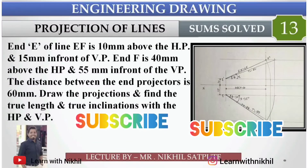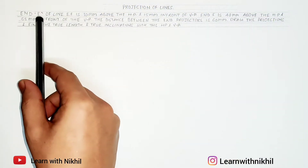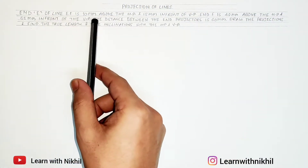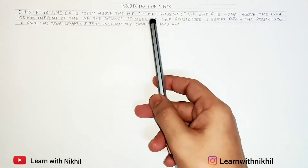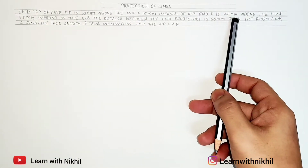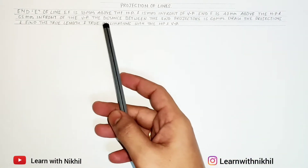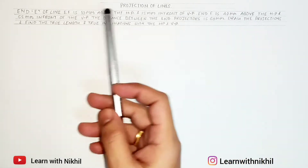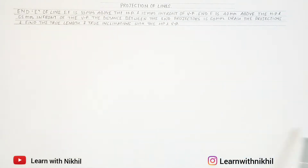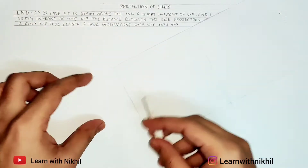Hello and welcome back to my channel Learn with Nikhil. Here we have taken another sum on projection of lines. The sum says the end E of line EF is 10 mm above the horizontal plane and 15 mm in front of the vertical plane. End F is 40 mm above the horizontal plane and 55 mm in front of the vertical plane. The distance between the end projectors is 60 mm. Draw the projection of the line and find the inclination.